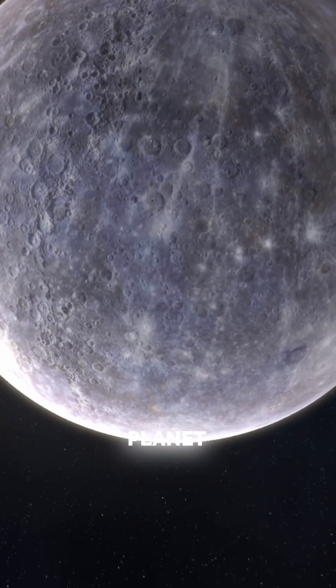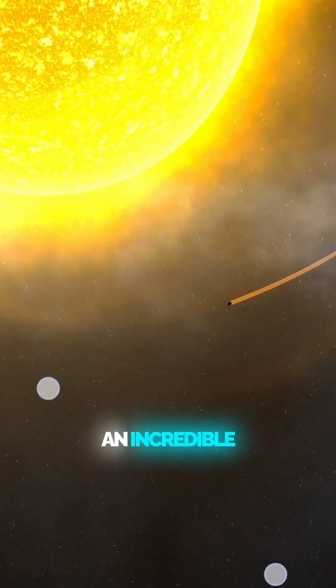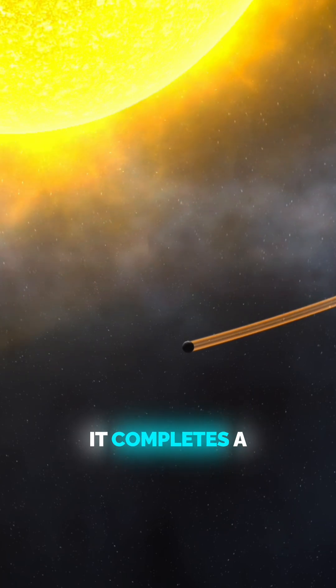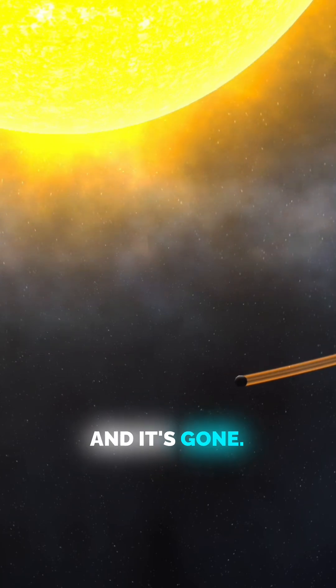1. Mercury is the fastest planet in the solar system. Mercury orbits the Sun at an incredible speed of 47 kilometers per second. That's over 170,000 kilometers per hour. It completes a full orbit in just 88 Earth days. Blink, and it's gone.